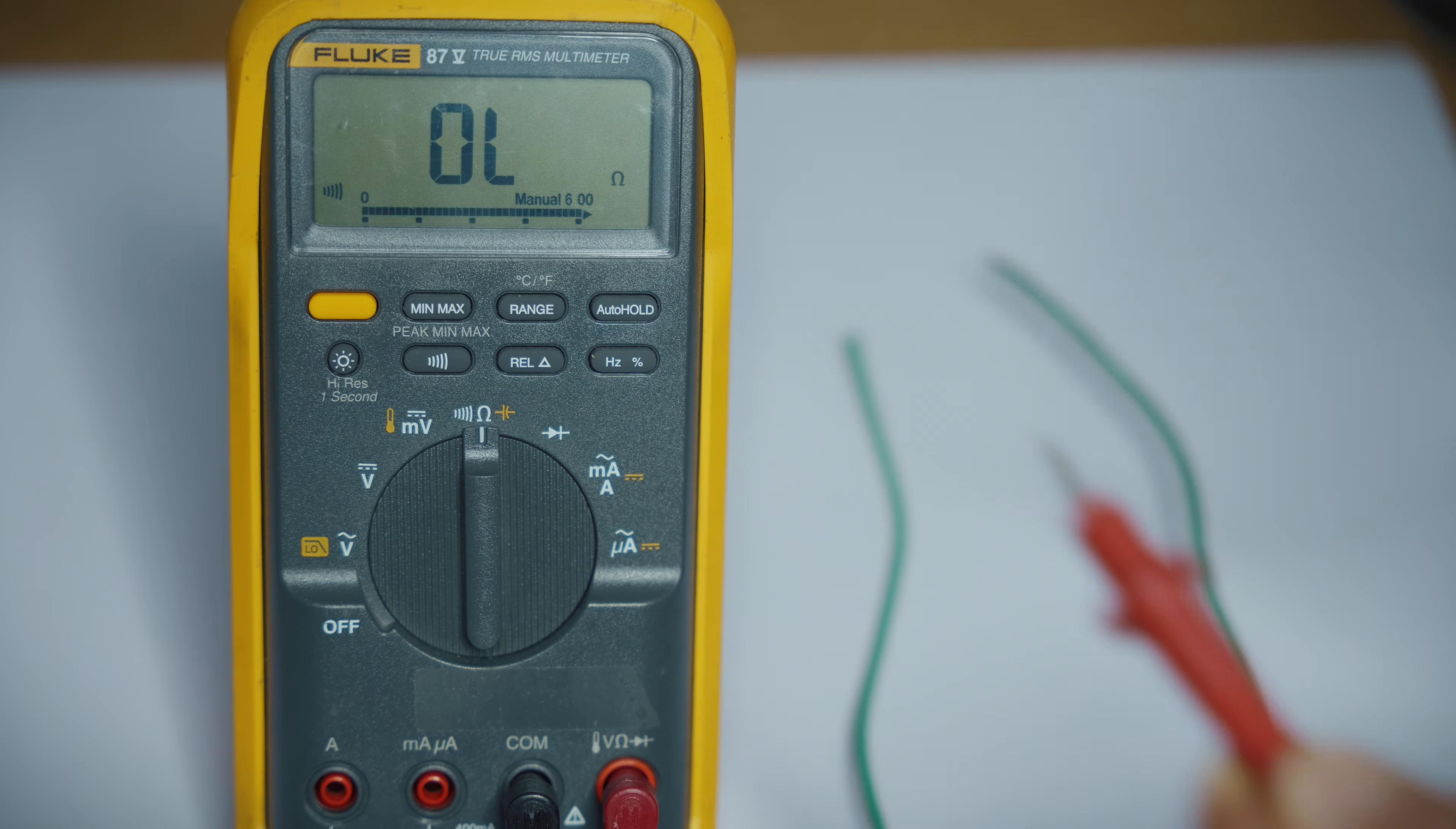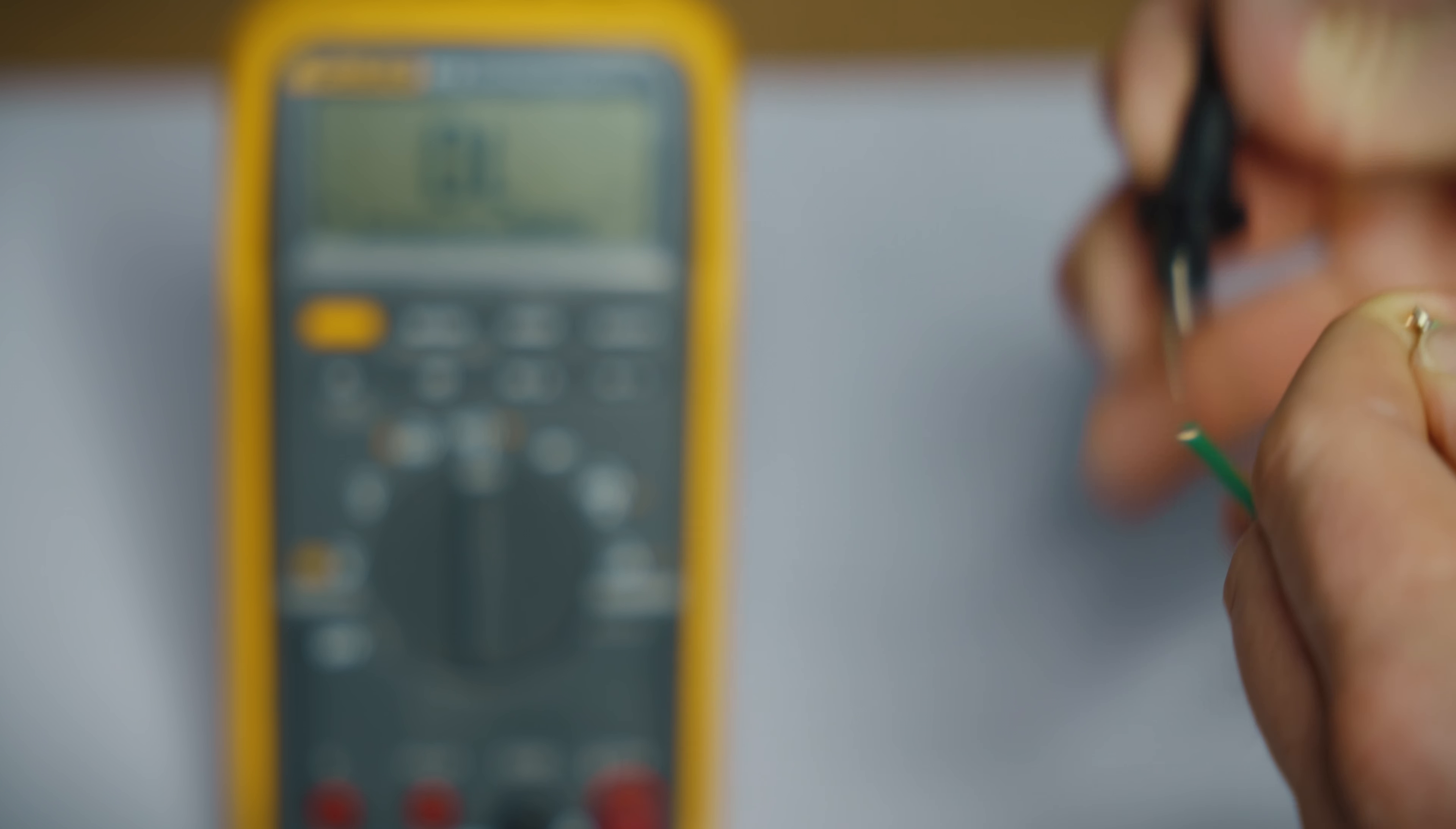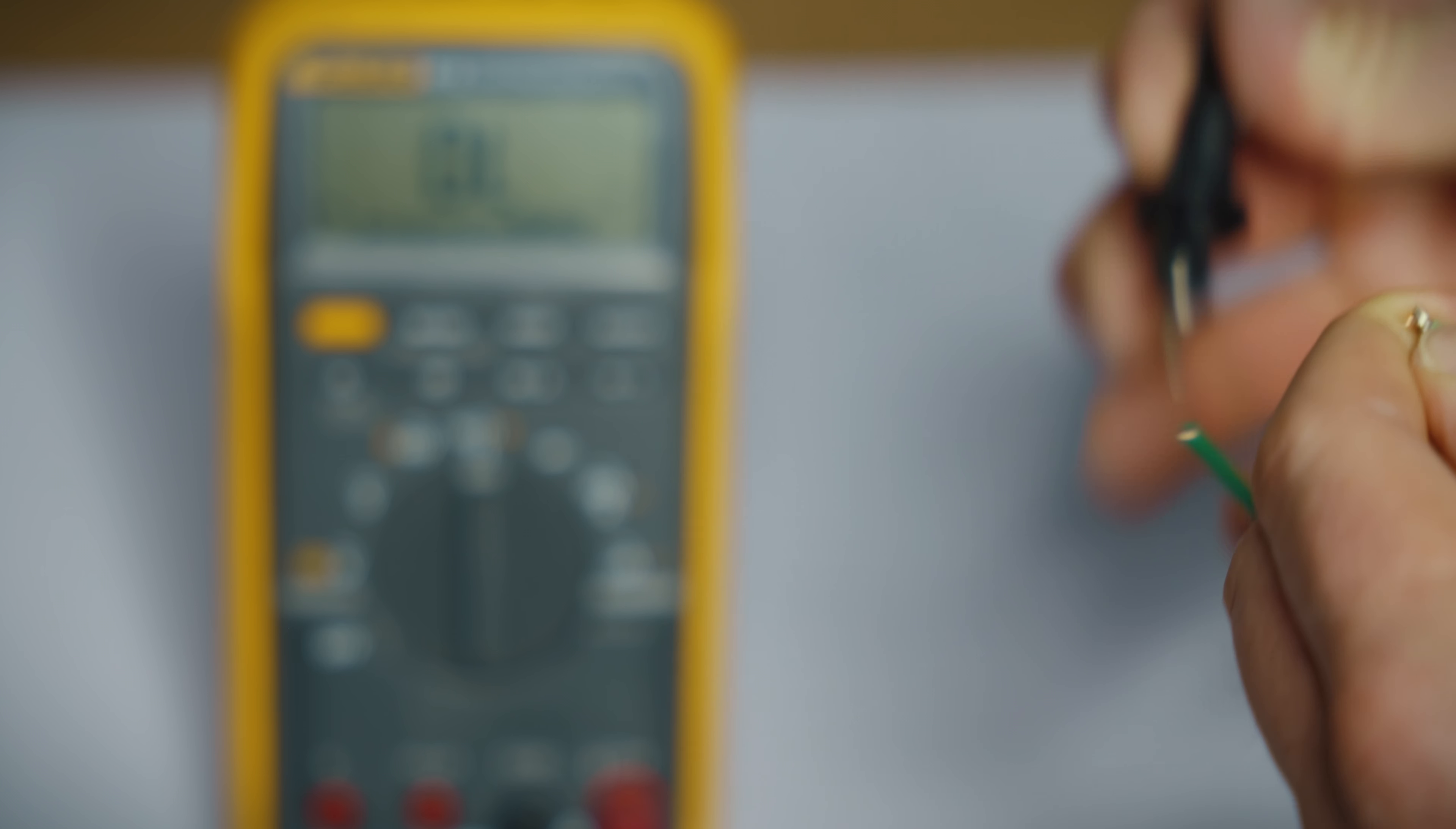While staying in the resistance setting, we can hit the little button that looks like a sound wave, and that turns on continuity. And now when we touch our leads together, it makes an audible tone to show that you have continuity. And continuity in an electric circuit is basically the two sides are touching. So if we hook up our probes again, one to each end, we have continuity, and you can hear the solid tone.